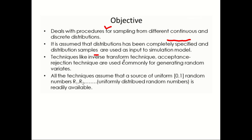We would discuss the inverse transform technique and acceptance-rejection technique for generating random variates. All the techniques discussed in this section assume the source of uniform, that is U(0,1), random numbers R1, R2, and so on, which are readily available — generated from different random number generator schemes.